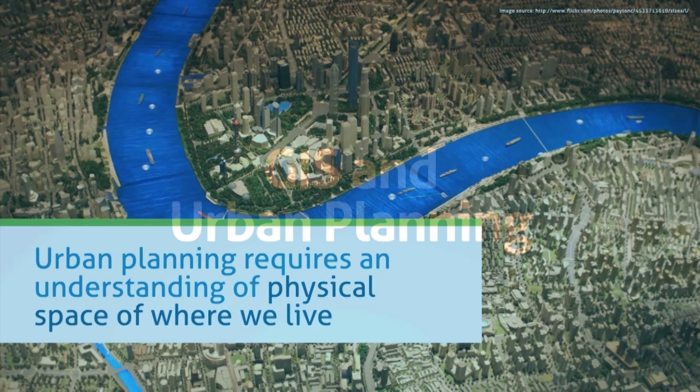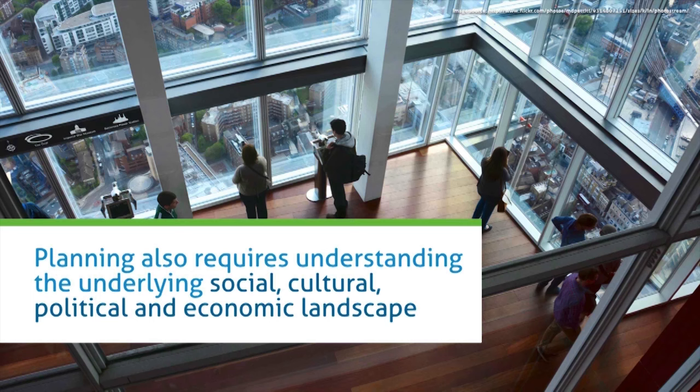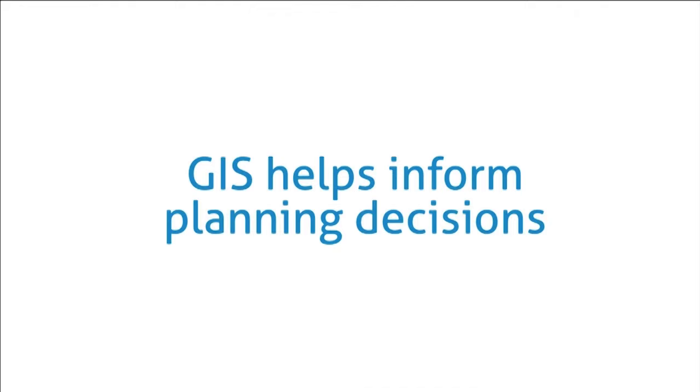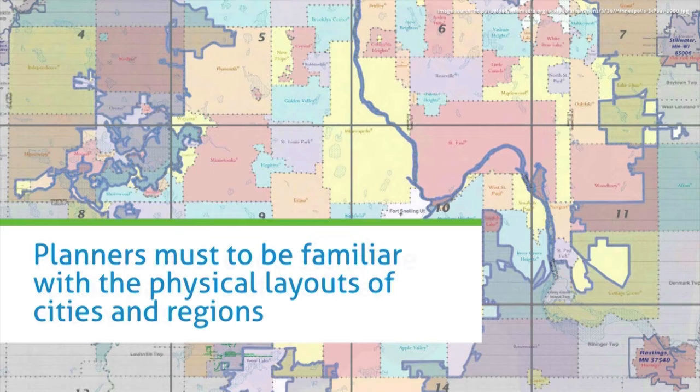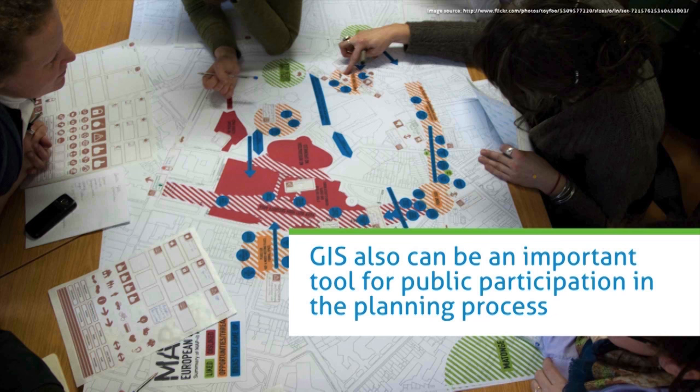Urban planning requires not only an understanding of the physical space where we live, but also an understanding of the underlying social, cultural, political, and economic landscapes. GIS helps inform planning decisions because planners must be familiar with the physical layout of cities and regions and must understand the spatial patterns of facilities and events. GIS is also an important tool for the public participation process, helping explain spatial problems to the general public.